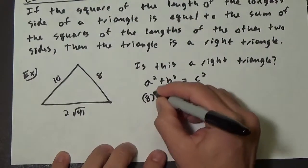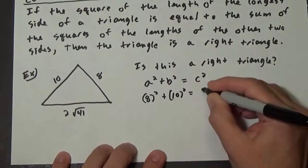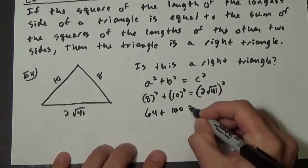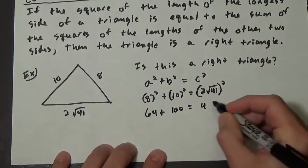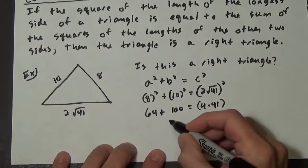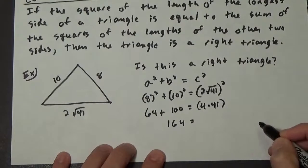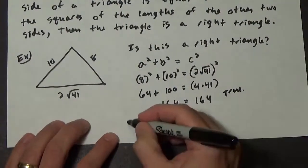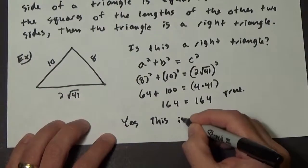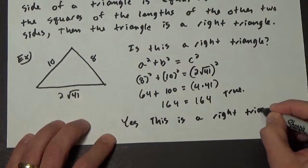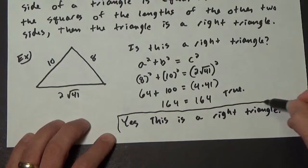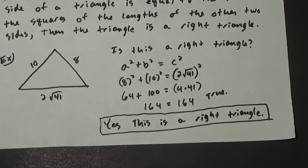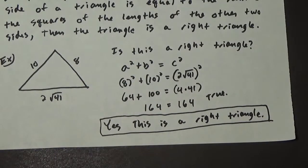So we compute: 8 squared plus 10 squared equals (2√41) squared. That gives 64 plus 100 equals 4 times 41, which is 164 equals 164. That is true, so yes, this is a right triangle. The converse of the Pythagorean Theorem is confirmed true, and here was an example of using the converse.